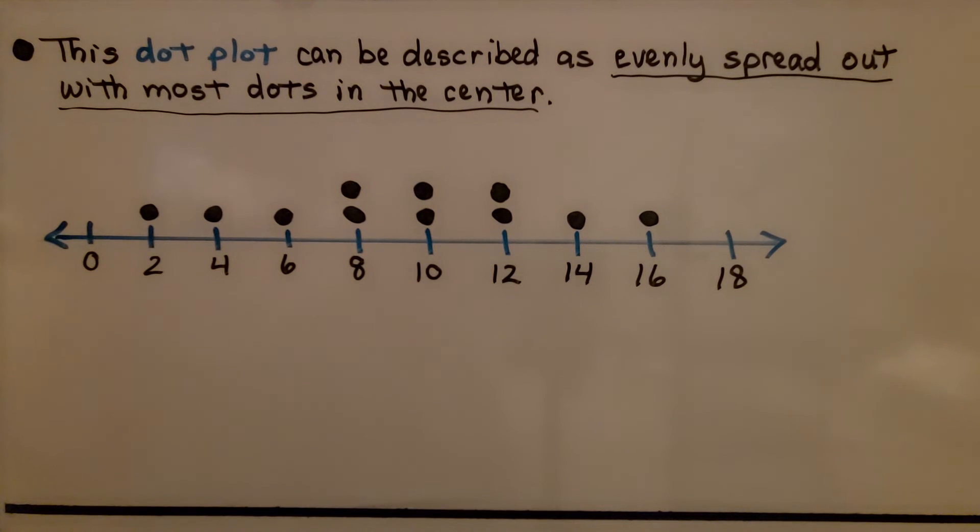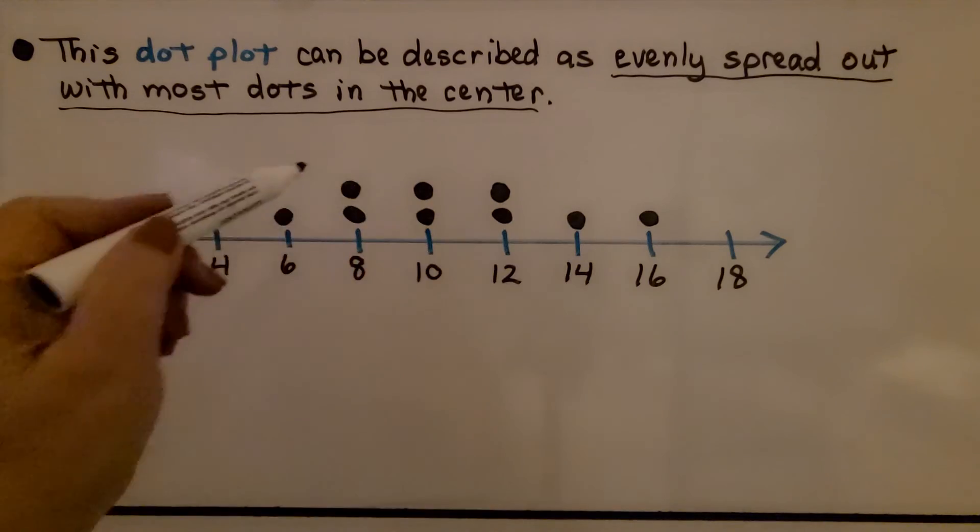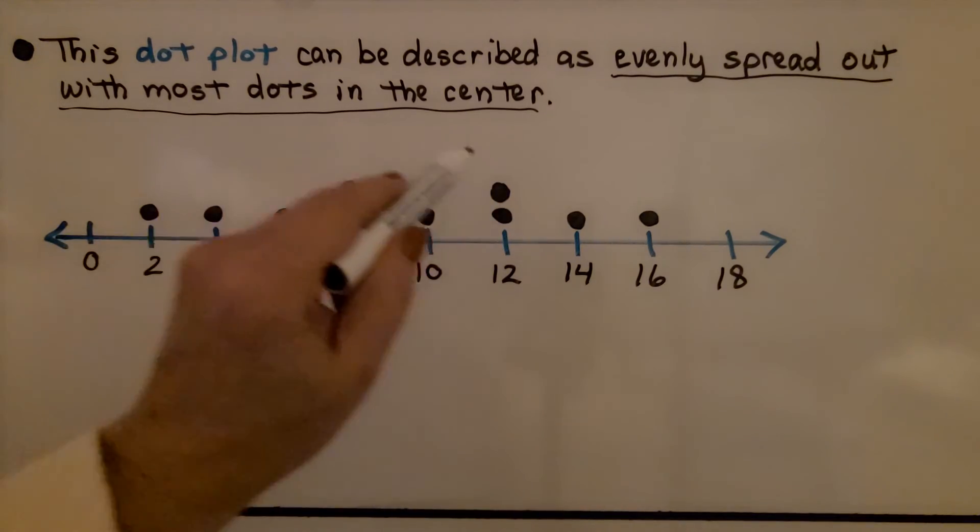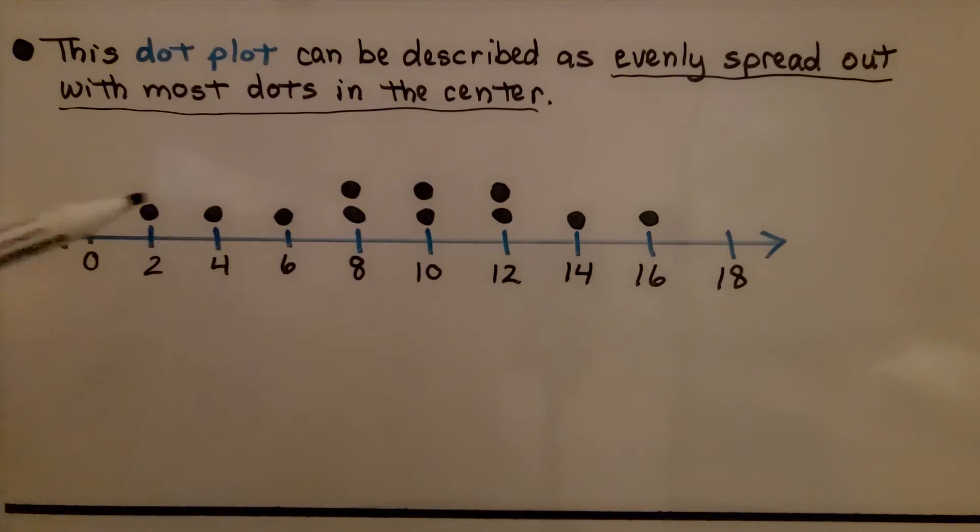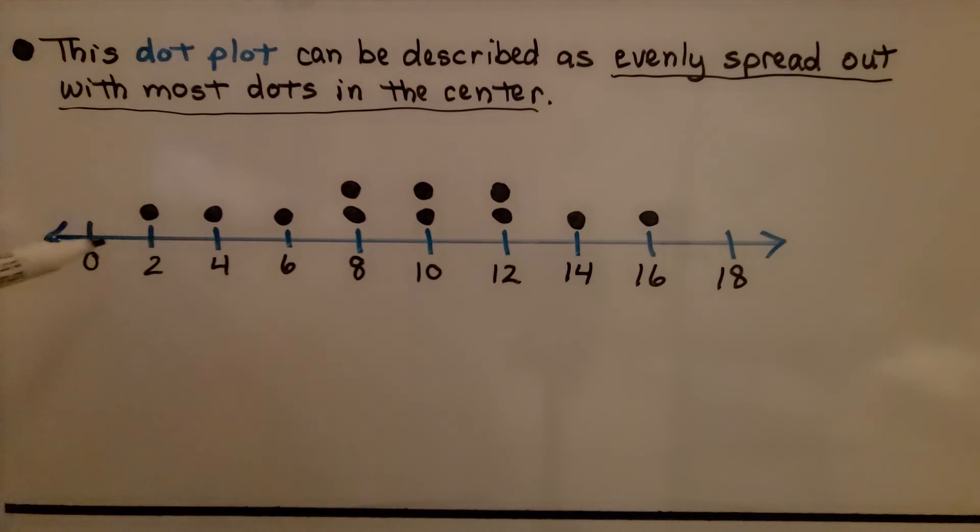Take a look at this dot plot. This dot plot can be described as evenly spread out, with most dots in the center. We can see there are more in the center, but it's pretty evenly spread out. It's not real tall and peaking like the other one did. The other one had a tall peak at 9. This one's kind of evenly spread out.